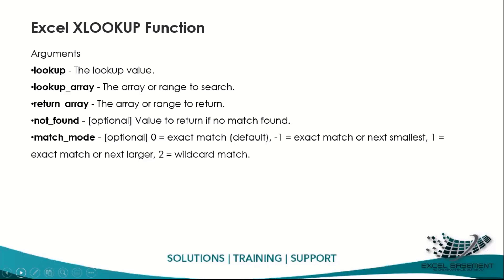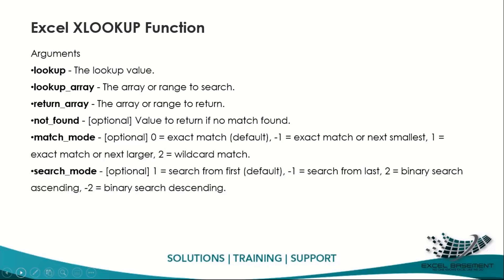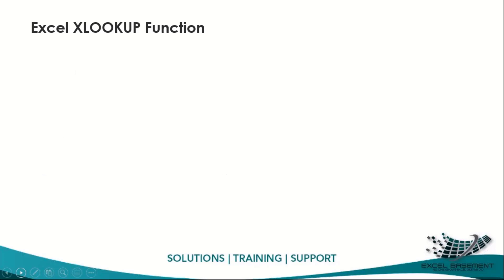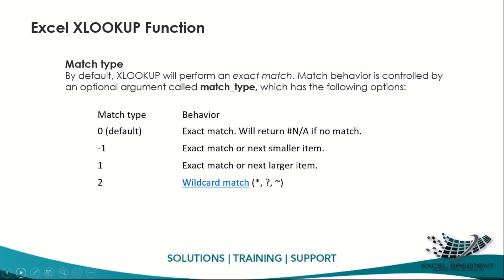You can use 2 for wildcard match, which allows partial matches using asterisk and question mark wildcards. For search mode: 1 searches from the first value (default), -1 searches from the last value (reverse), 2 is binary search ascending, and -2 is binary search descending. The appropriate option depends on whether you need exact, approximate, or partial matching.